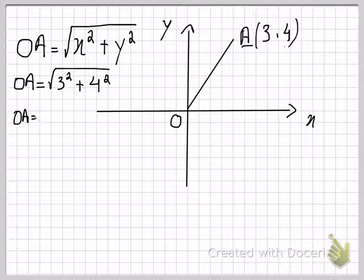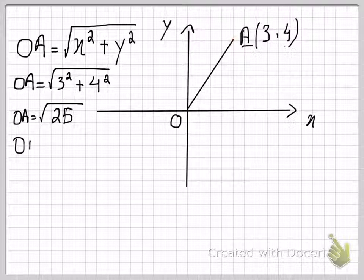Now 3 square is 9 and 4 square is 16. So 9 plus 16 gives you 25, and that means that the square root of 25 will be 5 units.